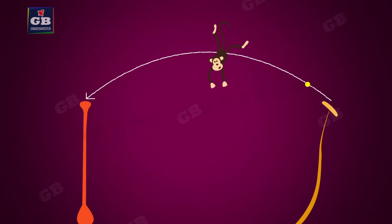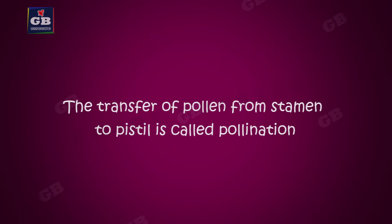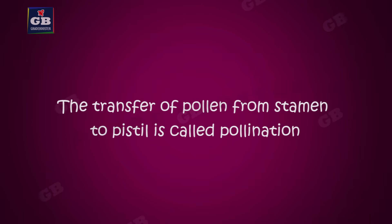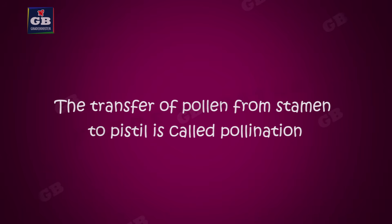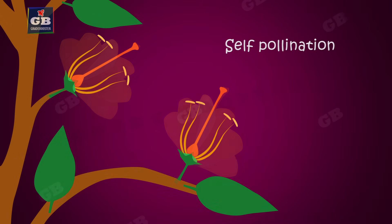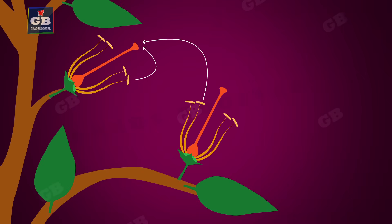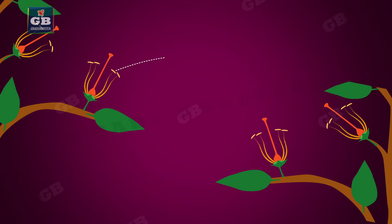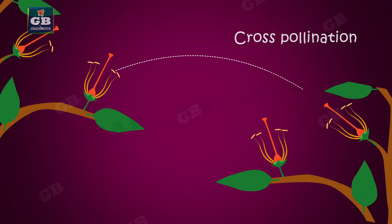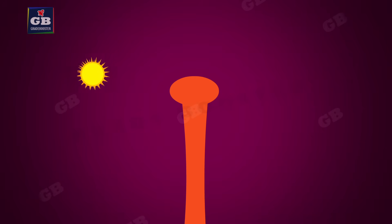Pollen grains travel from anther to stigma with the help of air, water, insects, birds, and other animals. The transfer of pollen from stamen to pistil is called pollination. If it occurs in the same flower or between flowers of the same plant, it is called self-pollination. If pollination takes place between two flowers of different plants, it is called cross-pollination.